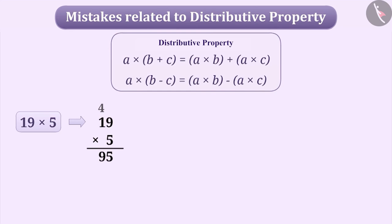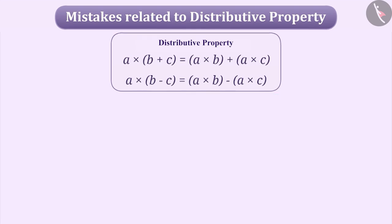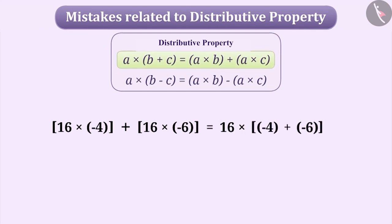Sometimes, by using distribution effectively, you can multiply mentally without using pen and paper. For example, we can distribute multiplication over subtraction by writing 19 as 20 minus 1 and find the solution 95 easily. Similarly, if we have to find the result of 16 multiplied by minus 4 plus 16 multiplied by minus 6, we can write it as 16 multiplied by minus 4 plus minus 6, which is 16 multiplied by minus 10, giving a result of minus 160.